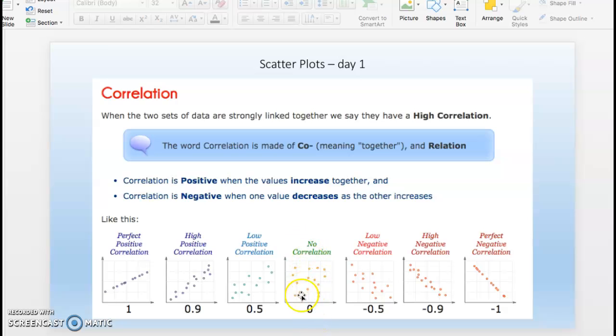Right in the middle: no correlation at all, just points randomly scattered on the Cartesian coordinate plane. The correlation coefficient would be zero.